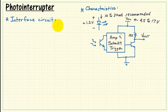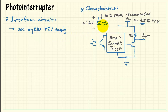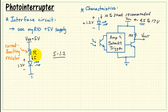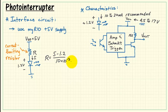Now let's consider some techniques to interface this photo interrupter to the MIRIO. The minimum supply voltage is 4.5 volts, so we need to use the MIRIO plus 5 volt supply. I'll assume we're using the same 5 volt supply to bias the current through the infrared LED. This current limiting resistor sets the current through the diode. With approximately 1.2 volts forward drop, the voltage across the resistor is 5 minus 1.2 divided by the resistance, which equals the current. Rearranging to solve for resistance at 10 milliamps, we find the ideal value is 380 ohms.